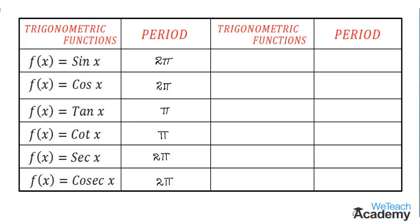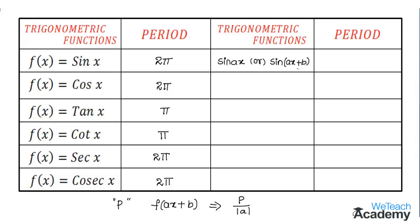If f(x) is a periodic function with period p, then f(ax + b) is also a periodic function with period p divided by |a|. For the trigonometric function f(x) = sin(ax) or sin(ax + b), the period will be equal to 2π divided by |a|, where a is the coefficient of x in the function.